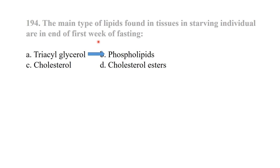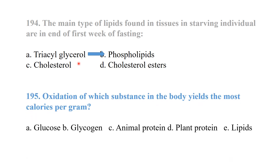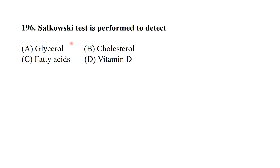MCQ 190: Oxidation of which substance in the body yields the most calories per gram? Among glucose, glycogen, animal protein, plant protein, and lipids — lipids yield the most calories per gram.